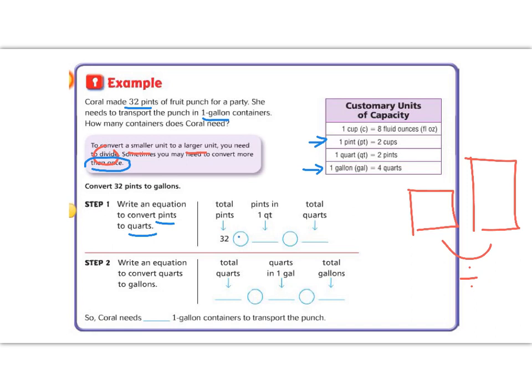And I got that 2 right here. So 32 divided by 2 equals 16 quarts. But I don't want to know how many quarts, I want to know gallons, so I'm going to keep going.